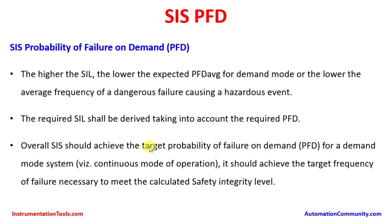For Probability of Failure on Demand, the higher the Safety Integrity Level SIL, the lower the expected PFD average for demand mode, or the lower the average frequency of a dangerous failure causing a hazardous event. A hazardous event happens in plants whenever there is any dangerous failure in a particular component such as a sensor or Final Control Element. When the SIL is higher, the PFD average is lower. The required SIL shall be derived taking into account the required PFD.